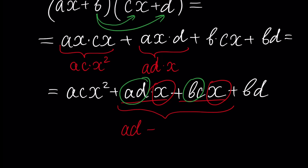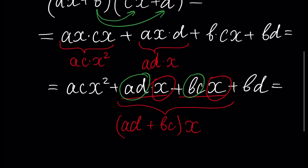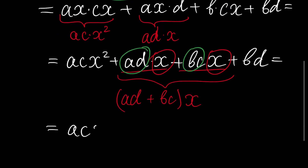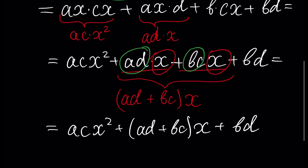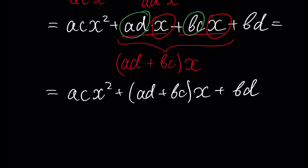The result will be ad plus bc times x. So all in all this can be written as acx squared plus (ad + bc)x plus bd. Our resulting polynomial consists of a monomial with x squared, a second monomial with x to the power 1, and a third monomial which is the constant term (x to the power 0, equal to 1).